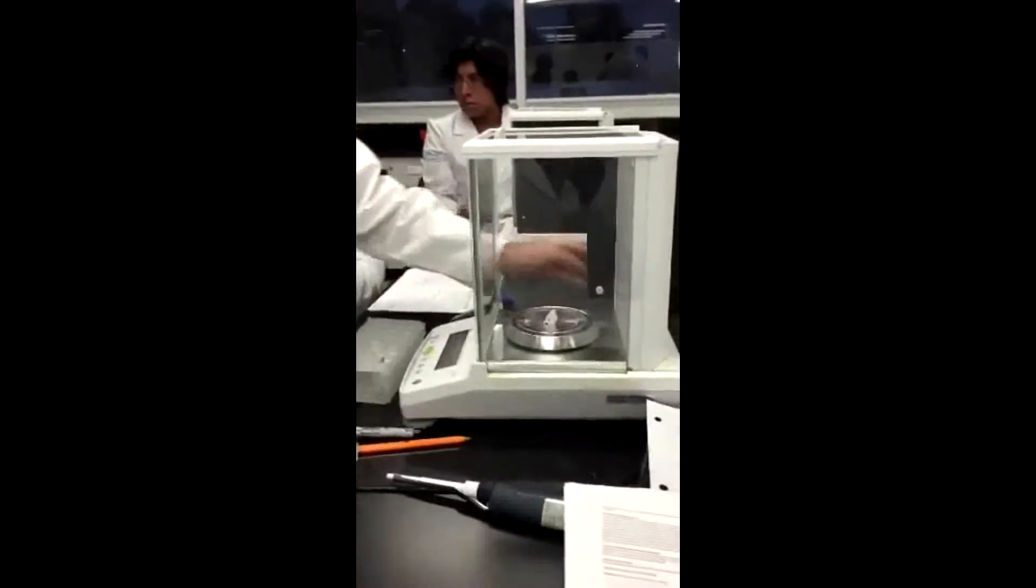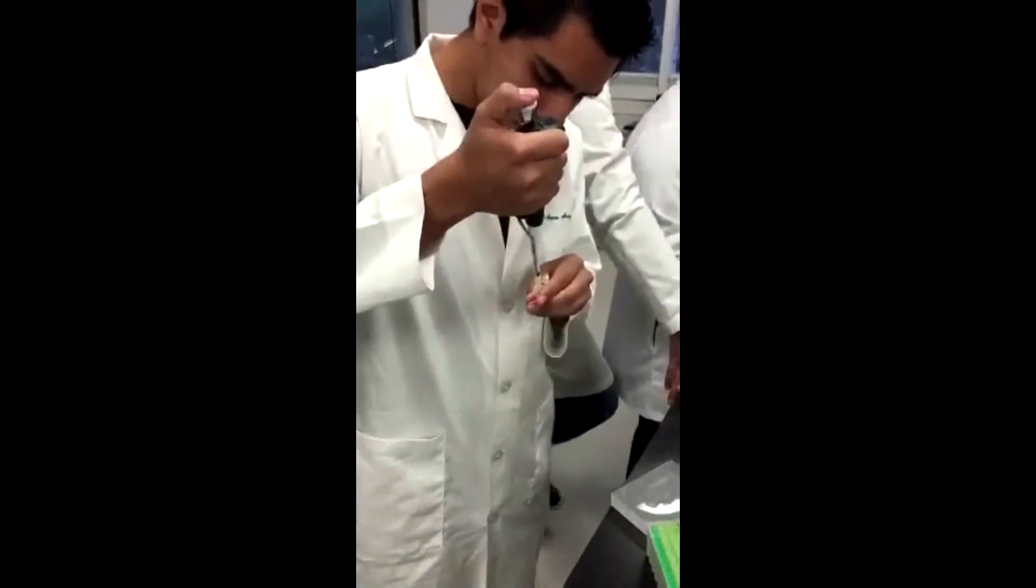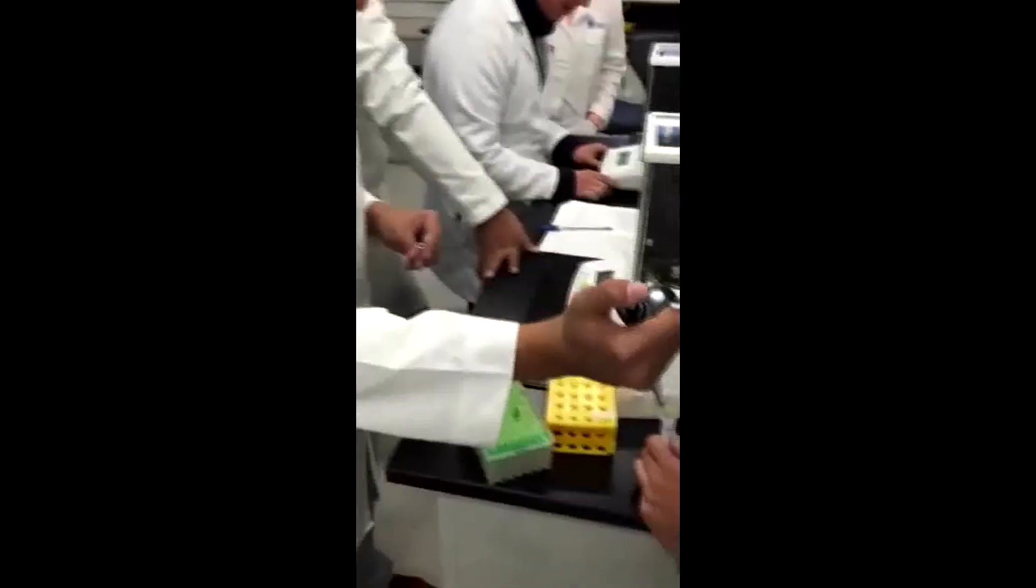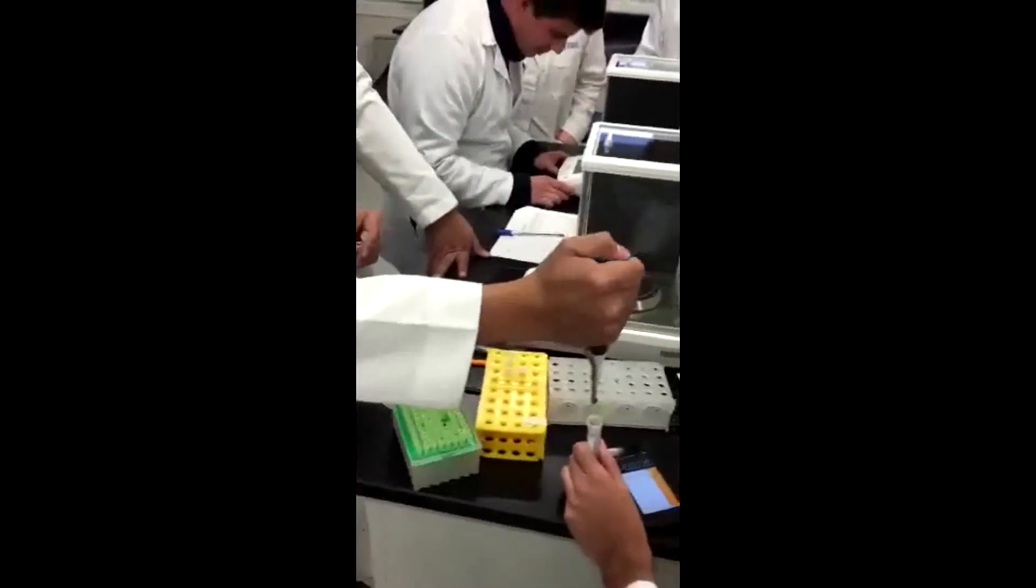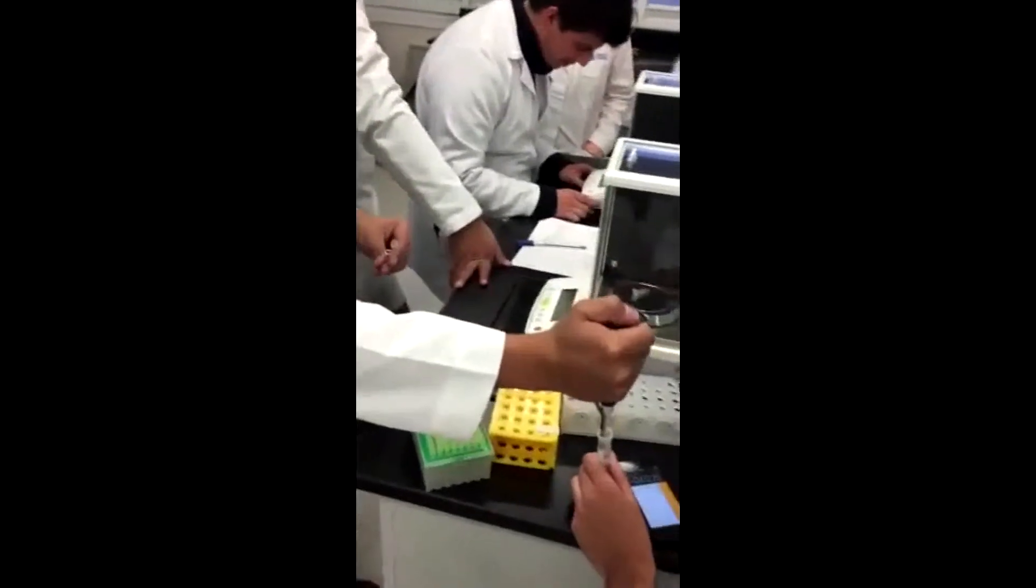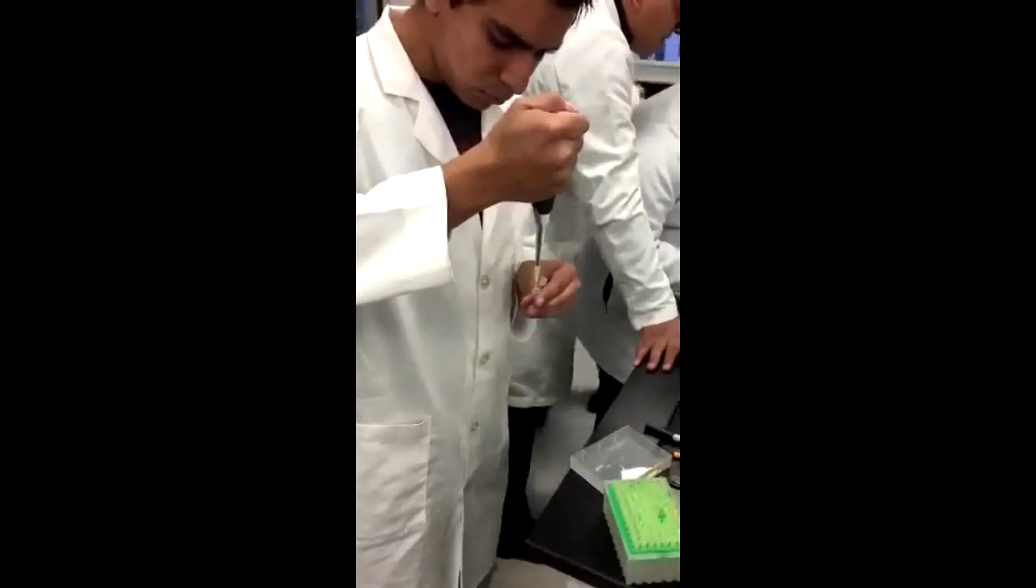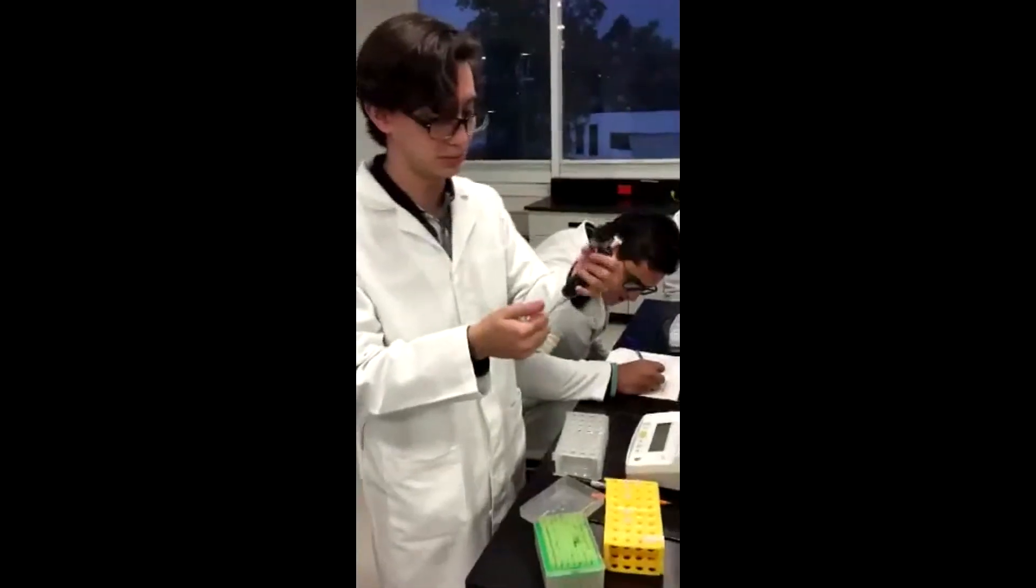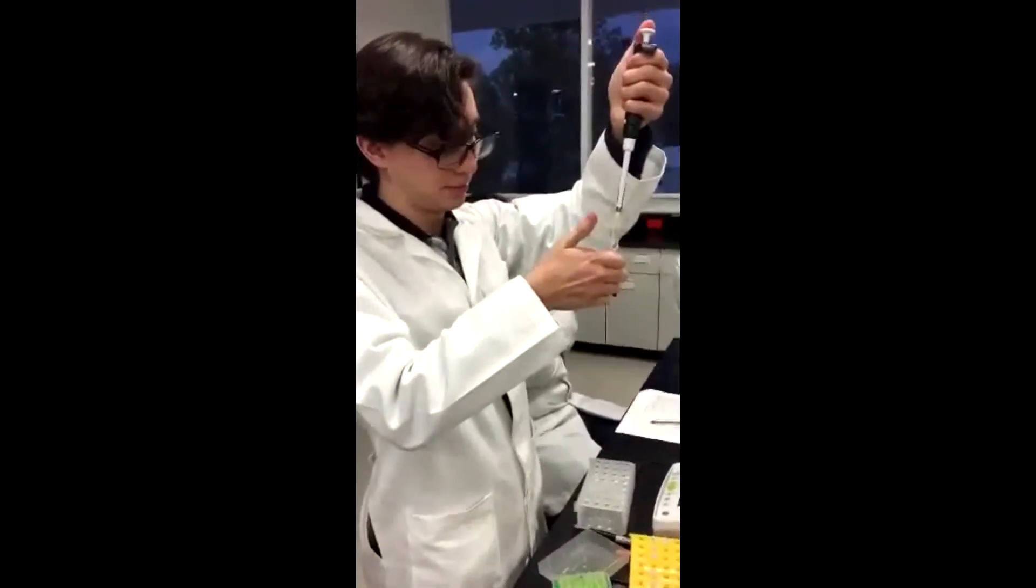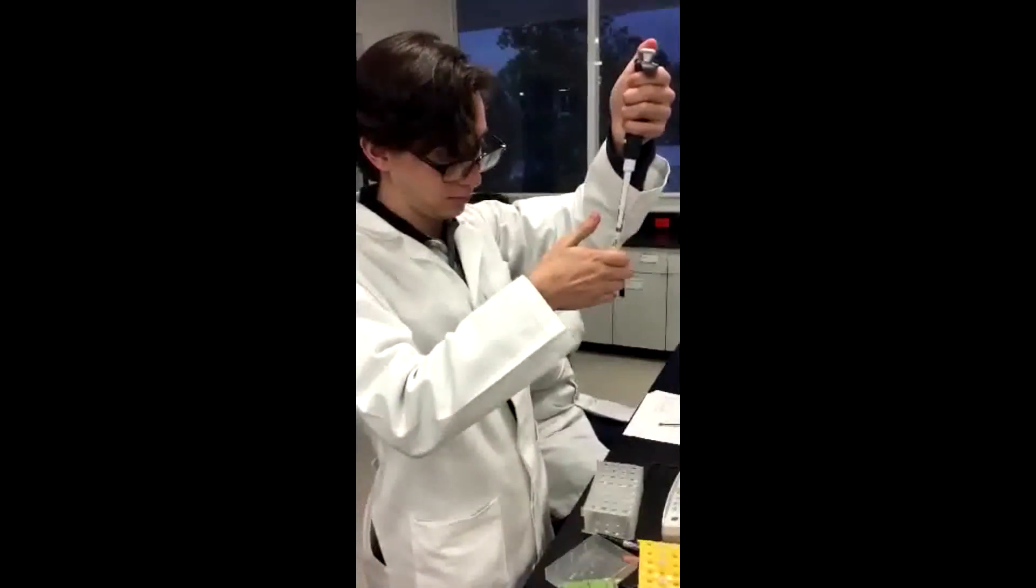In the second part of the experiment, we took a micropipet from 2 microliters, another from 200 microliters, and another of 1000 microliters, and we took five samples of every micropipet. Then, we calculated an average and a standard deviation to discuss the results.